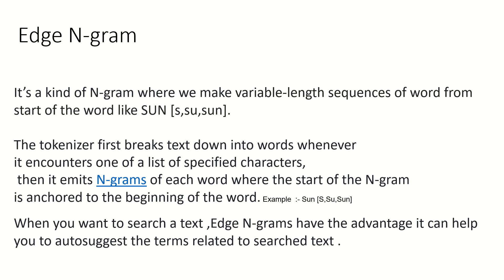When you want to search a text, edge ngram has the advantage of helping you auto-suggest terms related to the search text. For example, if you want to search for 'sun' in your document and have only provided 's u', it is still able to find 'sun' if it exists in your document. It will auto-suggest words matching 'su' - like 'sun', 'summer', 'some' - any word can be auto-suggested. Edge ngram can help you with auto-suggest as well.